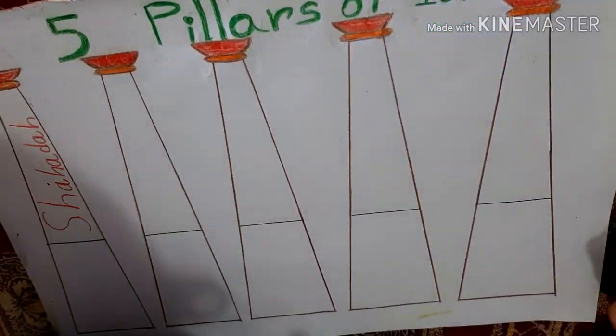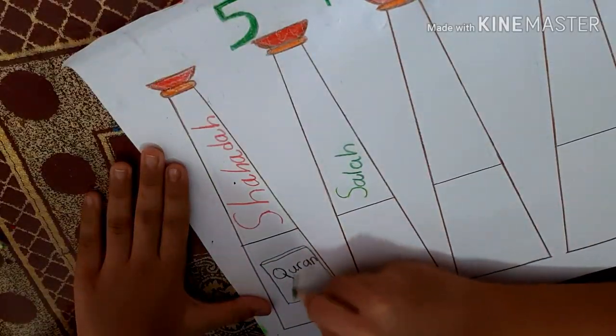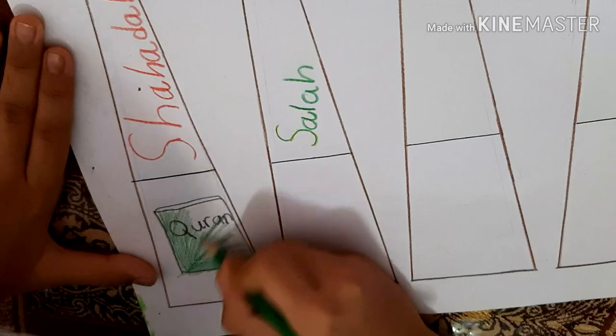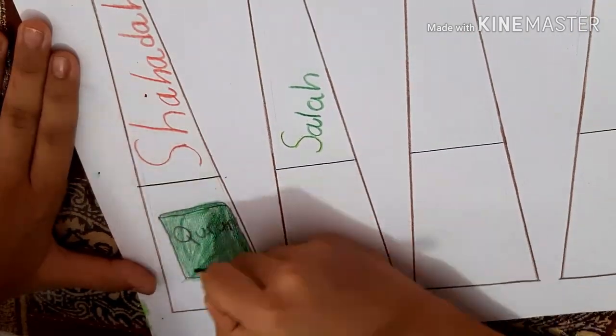The first pillar is Shahada, Testimony of Faith. Ashadu wa n laa ilaha illa laa wa ashadu wa n naa Muhammad rasulullah. I bear witness that there is no God, only Allah and Muhammad sallallahu alayhi wa sallam is his messenger.